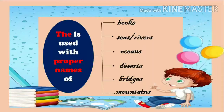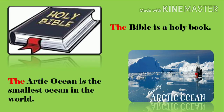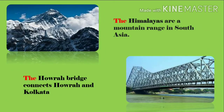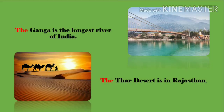Now students, remember THE is used with proper names of books, seas or rivers, oceans, deserts, bridges, or mountains. Here are few examples: The Bible is a holy book. The Arctic Ocean is the smallest ocean in the world. The Himalayas are a mountain range in South Asia. The Howrah Bridge connects Howrah and Kolkata. The Ganga is the longest river of India. The Thar Desert is in Rajasthan.